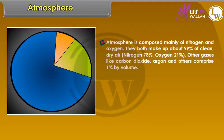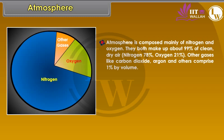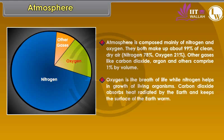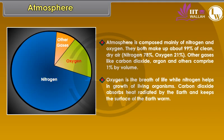The atmosphere is composed mainly of nitrogen and oxygen. They both make up about 99% of clean dry air — nitrogen 78% and oxygen 21%. Other gases like carbon dioxide, argon and others comprise 1% by volume. Oxygen is the breath of life. Nitrogen helps in the growth of living organisms, while carbon dioxide absorbs heat radiated by the earth and keeps the surface of the earth warm.